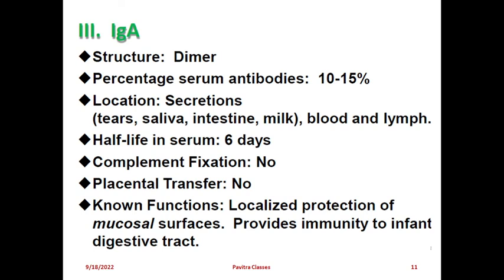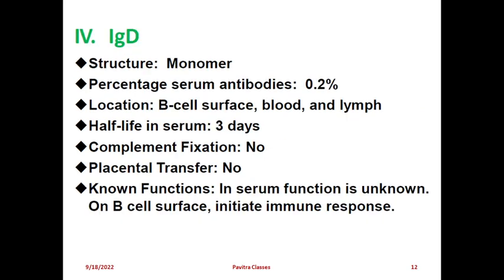IgA has a dimer structure. Its serum antibody percentage is 10 to 15%. IgA is present in tears, saliva, intestine, and milk, as well as blood and lymph. Half-life in serum is 6 days. Complement fixation is no; placental transfer is no. Its function is to protect mucosal surfaces - the outer surfaces including the mucosal layer of the eye, mouth, and digestive tract. It provides immunity to the infant's digestive tract as it is present in saliva.